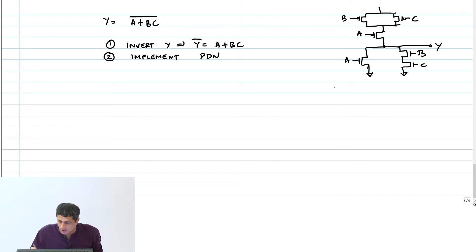If you look at the function on the pull-down network, y PDN is what? A plus BC whole bar, because it is going down to zero.